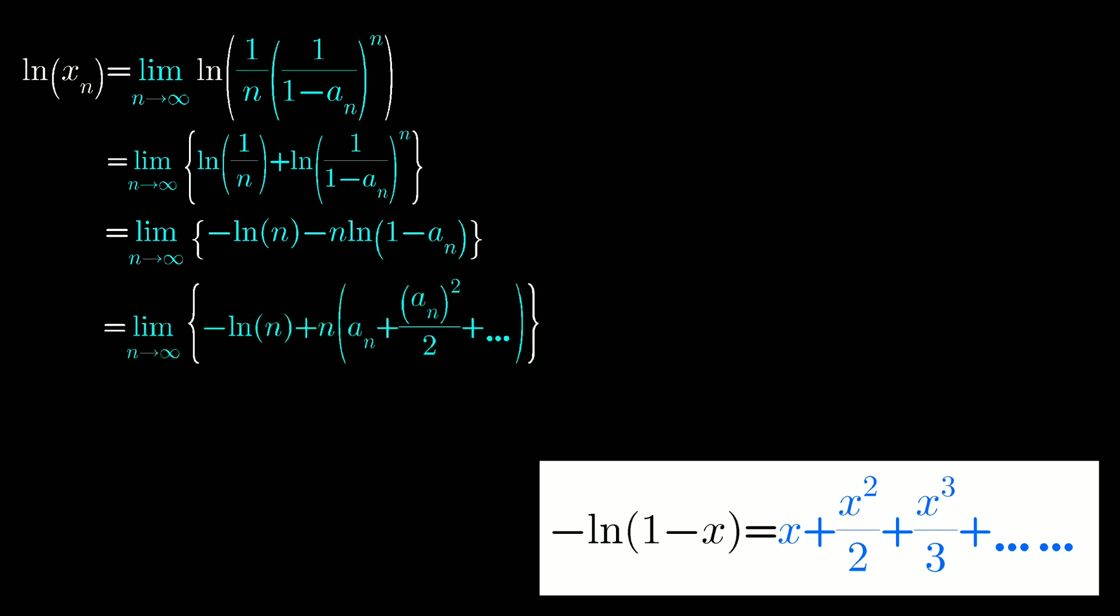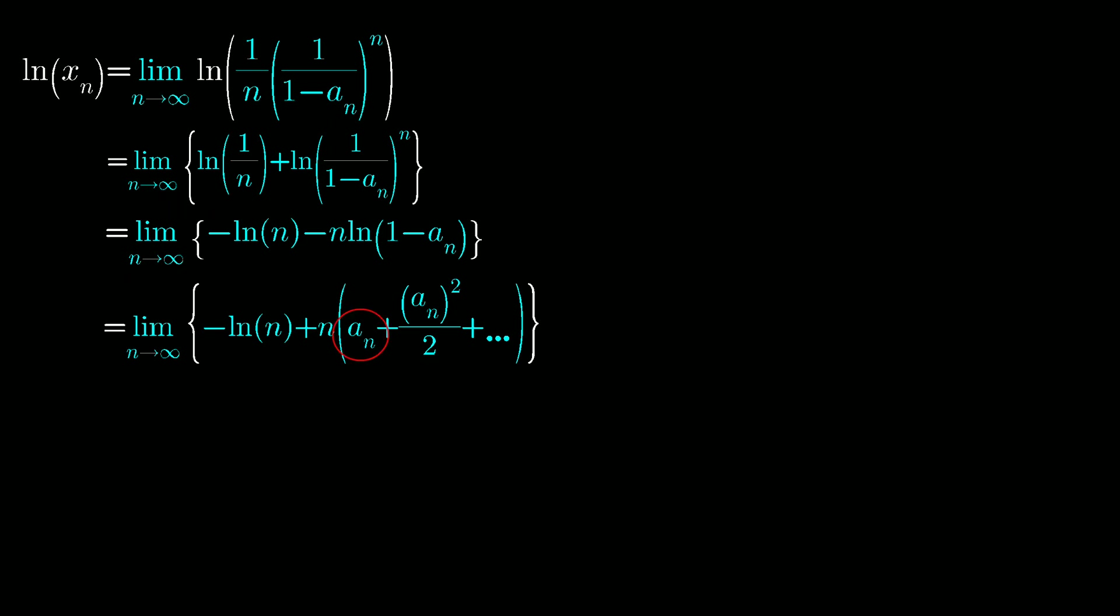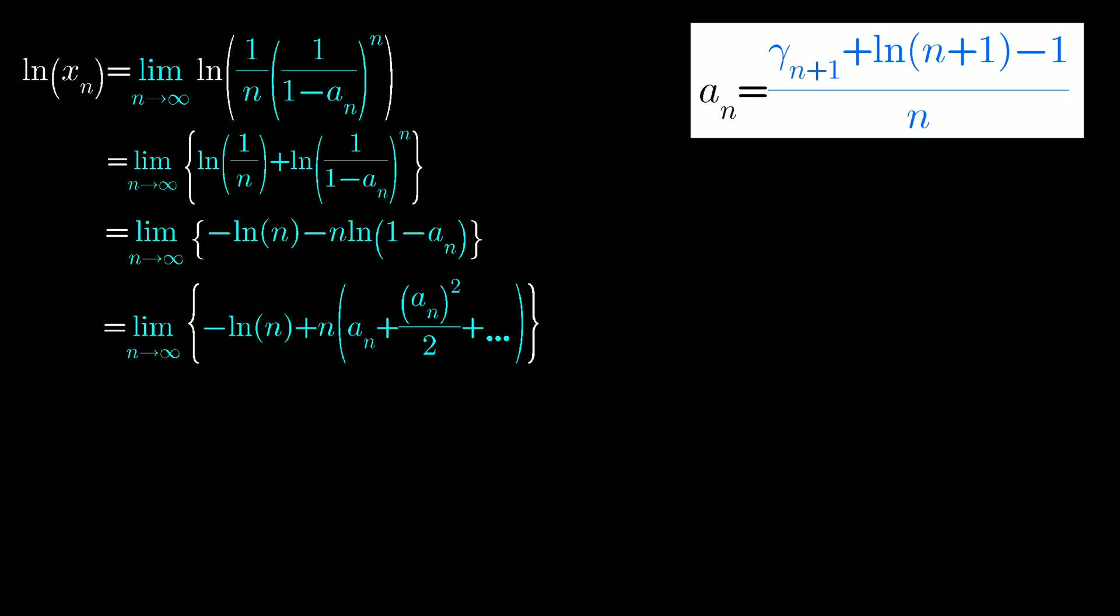Here from the expansion we will take only the first term an, because after the first term the power of an will increase. That means in the value of an the power of denominator n will going to increase.